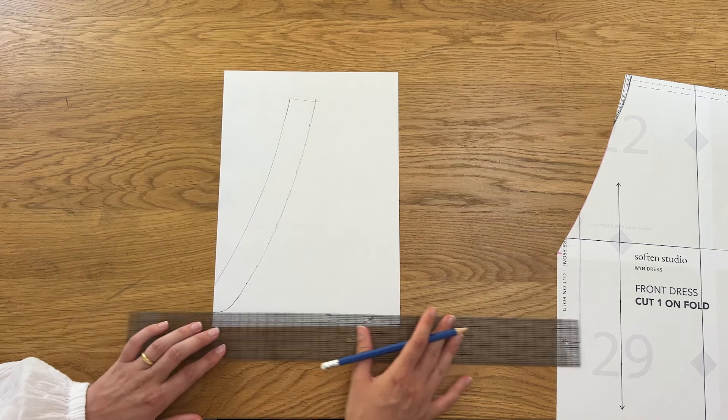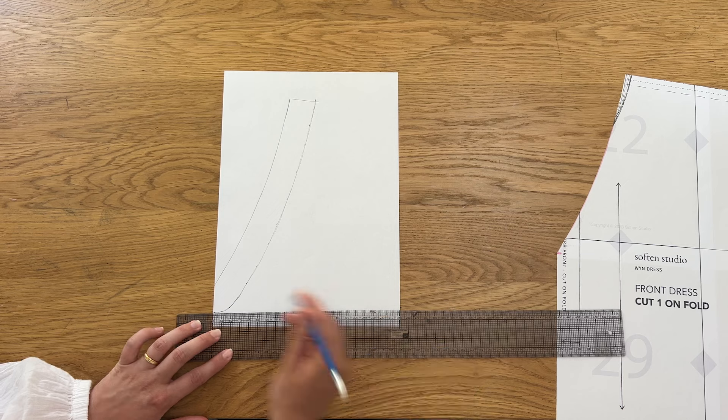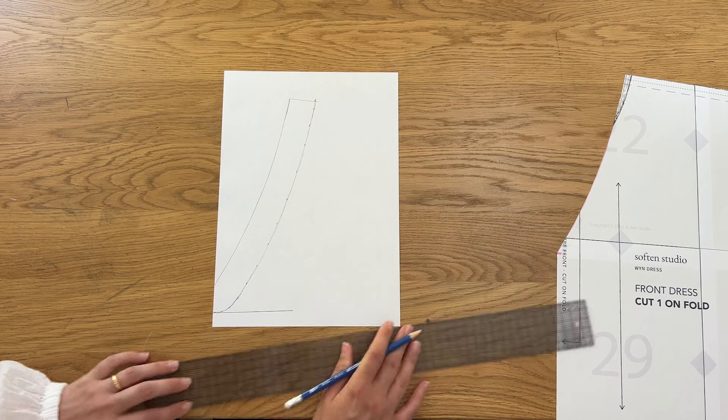I decided to square off my facing at the front as it's easier to fold and stitch down in a later step.